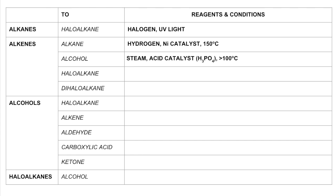acid — and the temperature to create the steam must be greater than 100°C. For alkene to haloalkane, you would react it with a hydrogen halide, such as hydrogen chloride or hydrogen bromide.